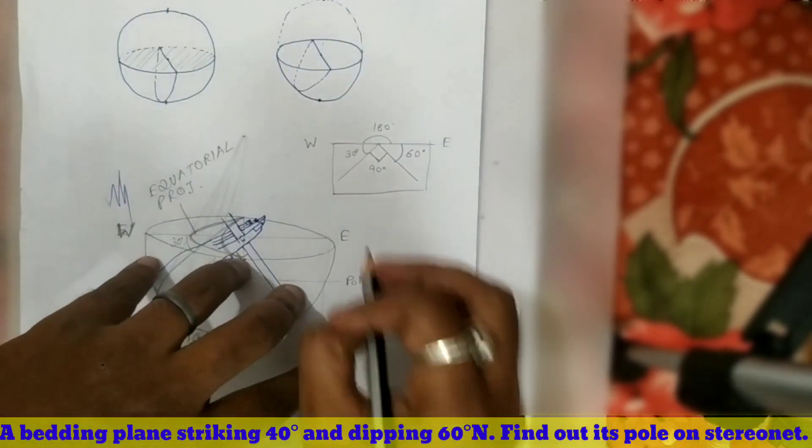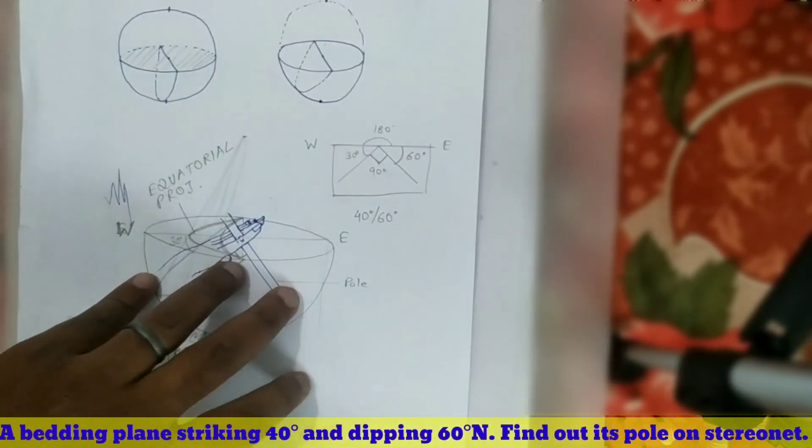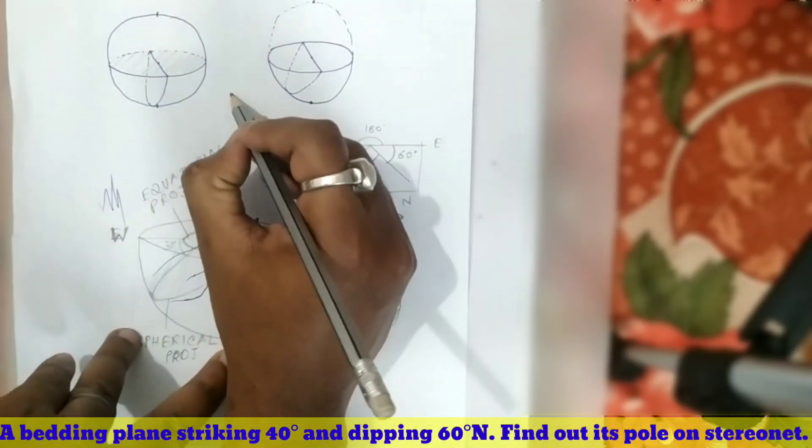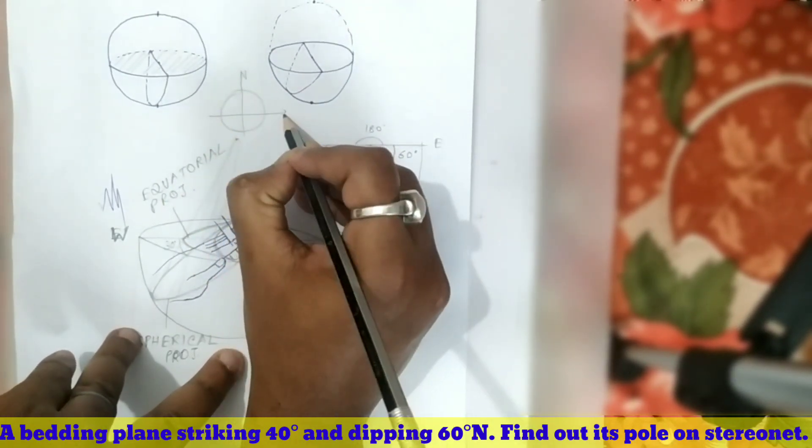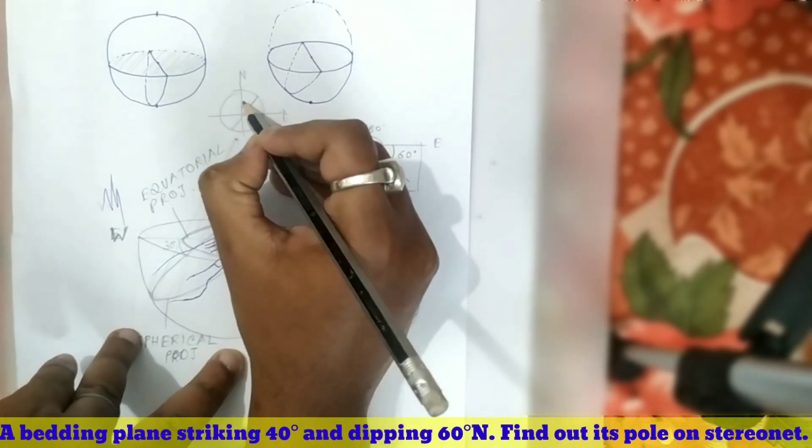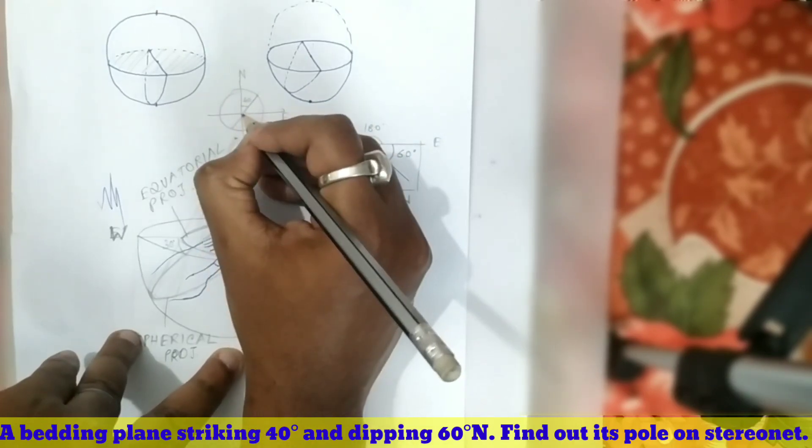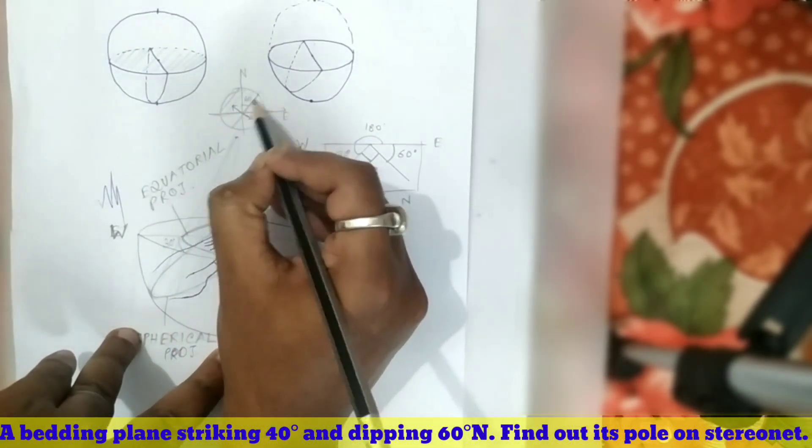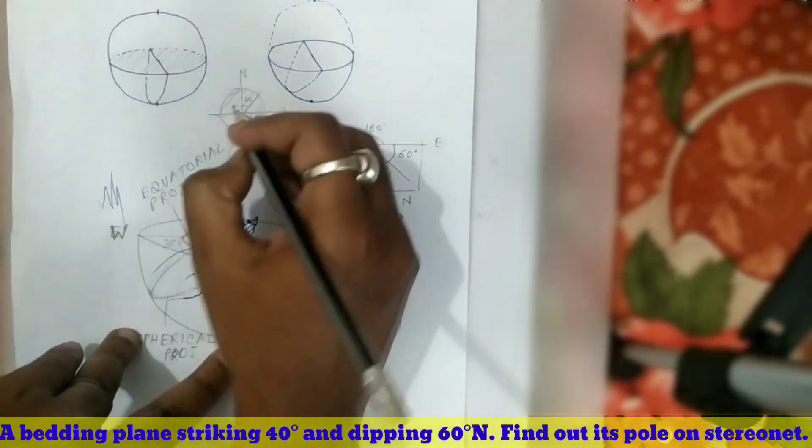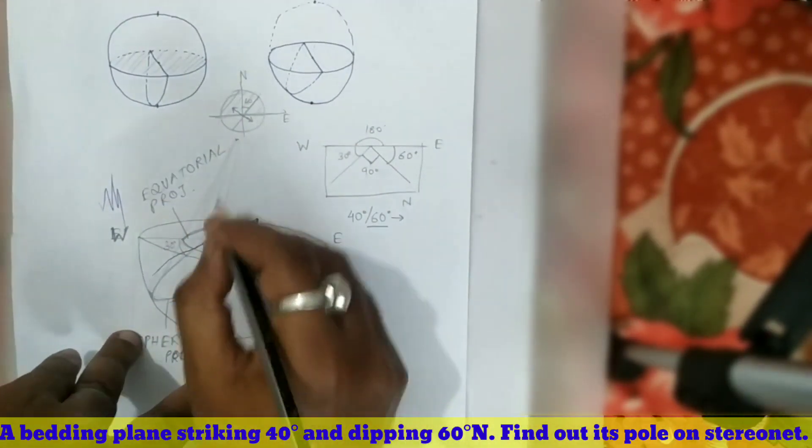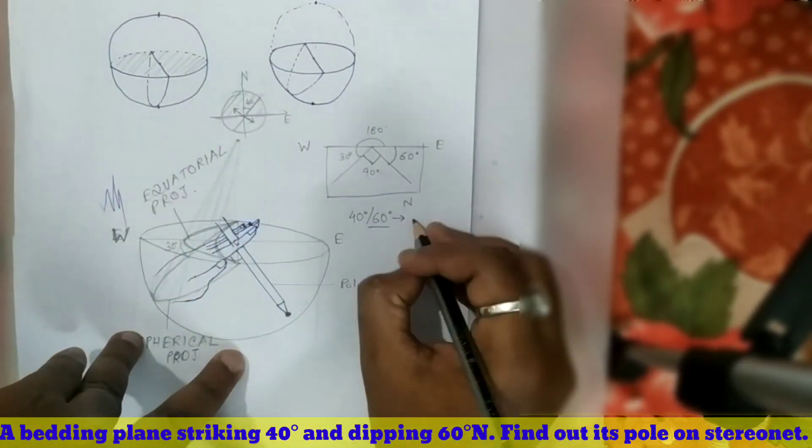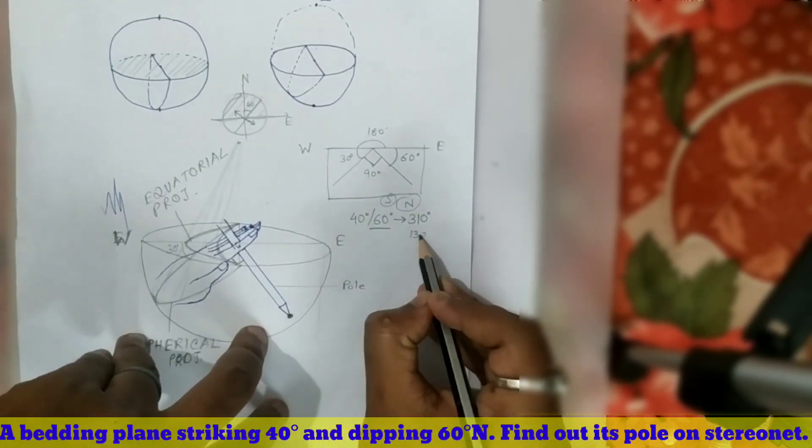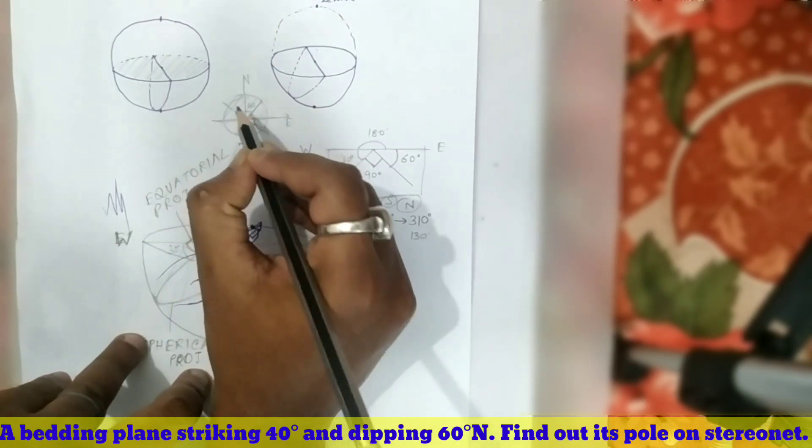Now our question: the bedding plane strike is 40°, dip is 60° northward. If this is the stereonet with north and east, if the plane has 40° strike, it can dip either this way or that way. Here it is northward, so this part falls within the northern side. The dip amount is 60° and dip direction will be 310°. If it was south, it would be 130°. This is the attitude.